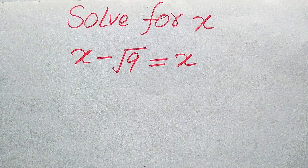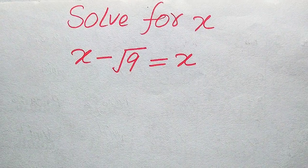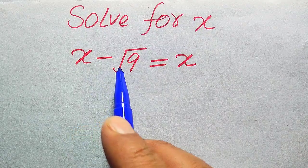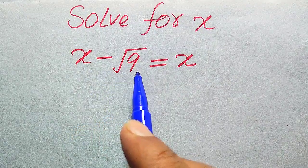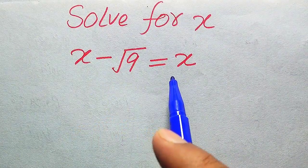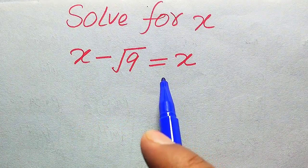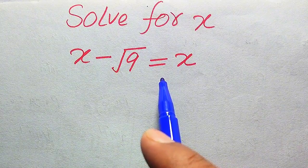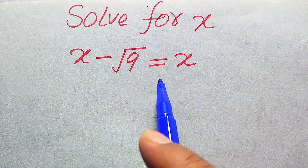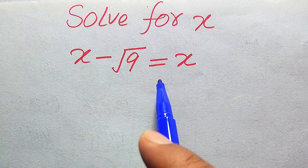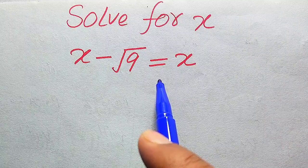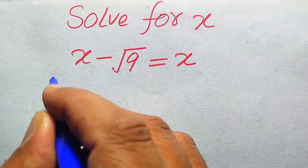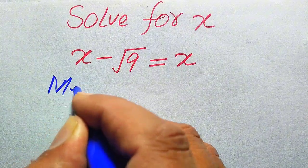Hello everyone. How to solve this problem for the values of x, if we have x minus square root of 9 equals x. We solve this problem for all the values of x. First we need to find all the roots of this equation, and at the last we will verify which of the roots are solutions and which are extraneous roots.